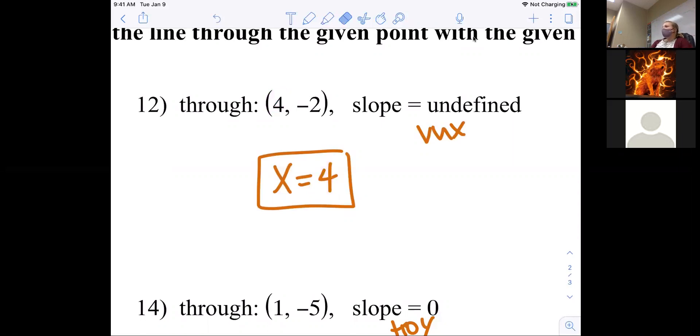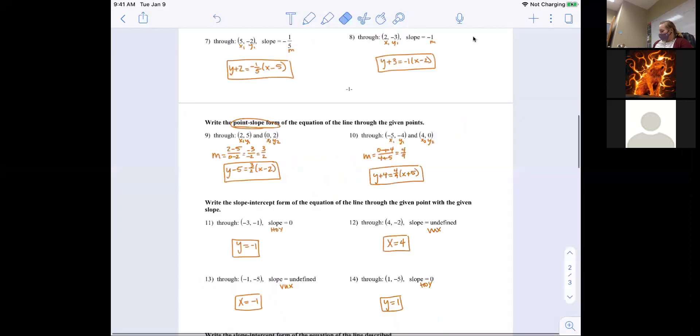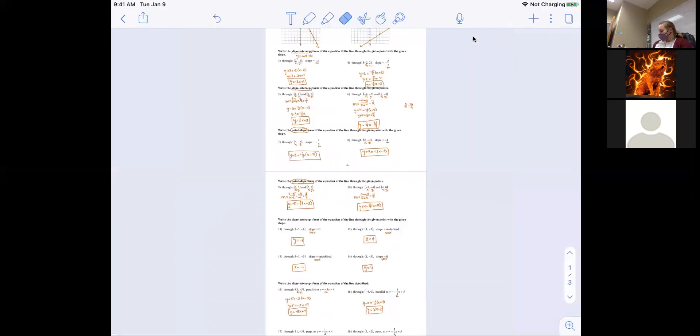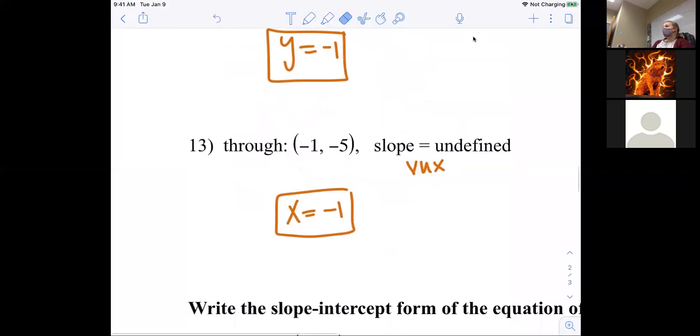Any other questions on this paper? Anything at all? 13 was x equals negative 1, another just straight vertical line. For the one above it, you could have written y equals 0x minus 1, but that would not work for this one because technically the 0 is with the y, because it's a vertical line. For the horizontal lines, yes, you could have written that.